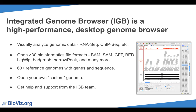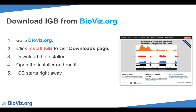If you have any questions or issues, please reach out to us by going to bioviz.org and clicking Get Help in the nav bar. To download IGB, go to bioviz.org and click the Install IGB button in the top right, then select your operating system. We support Mac, Windows, and Linux. This will download the IGB installer. Once the download is complete, open the installer and follow the installer instructions to complete the installation. You are now ready to start IGB!